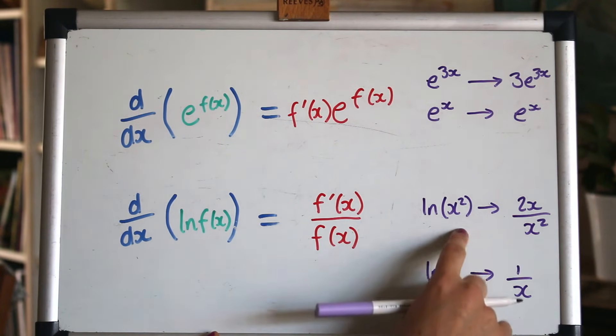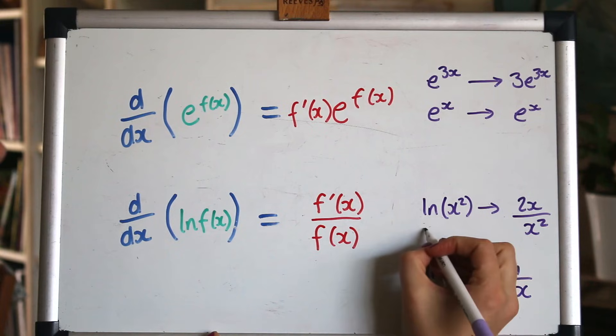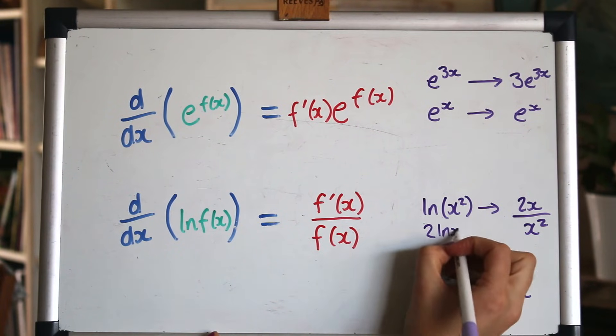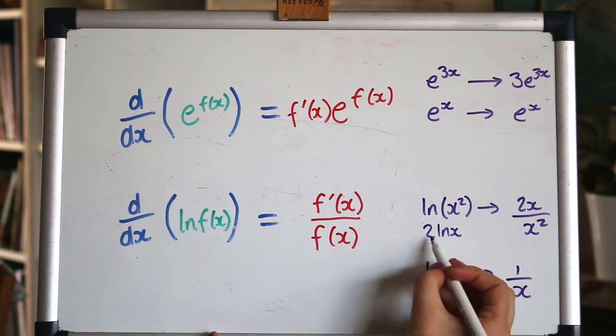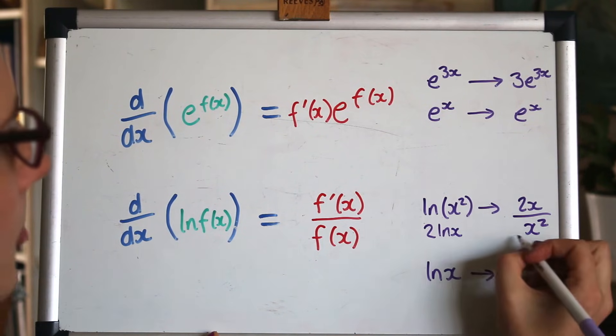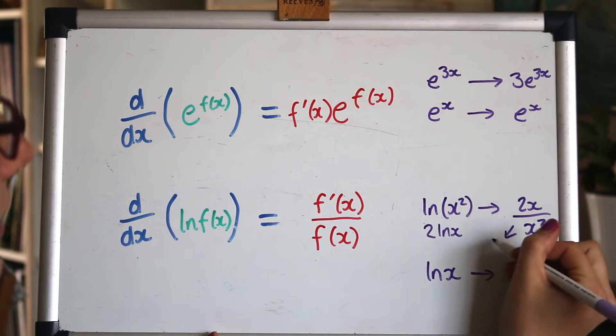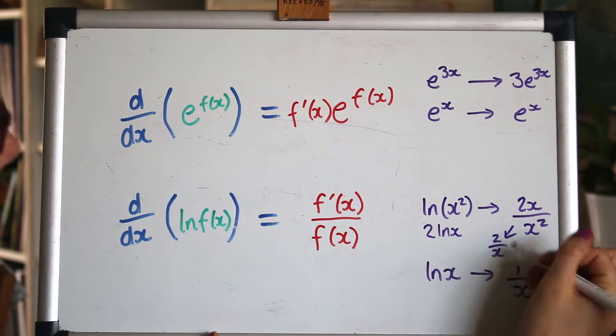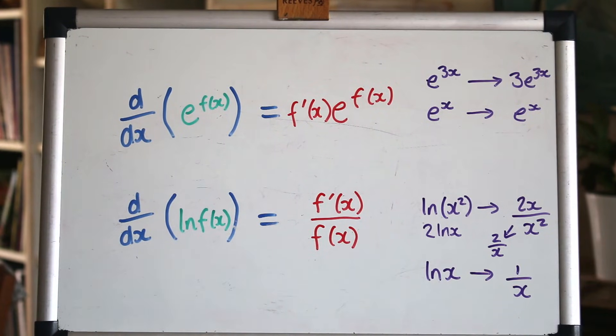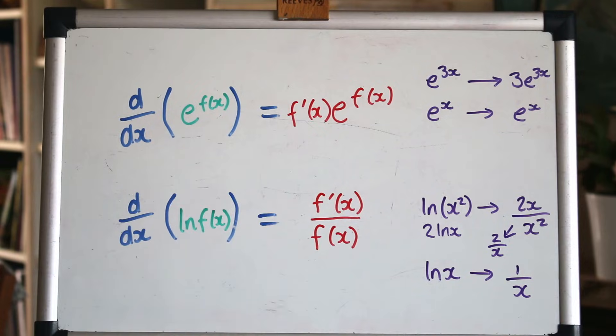And just linking to this, actually, remember that ln of x squared can also be written as 2 ln of x. So it would be 2 times the derivative of this, which would be 2 over x. And can you see that that would simplify to 2 over x? So that kind of links them up. Let's do some examples using these of the product and quotient rule now.